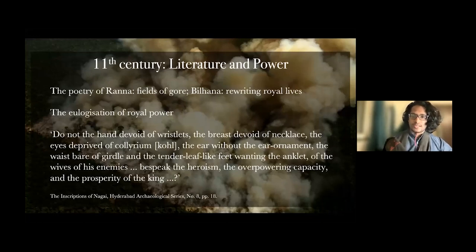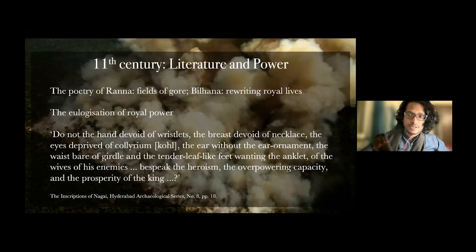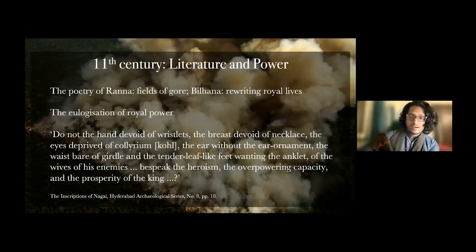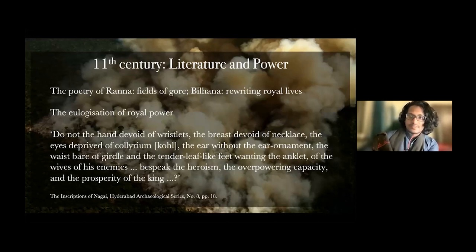A verse describing the Chalukya king Jayasimha II brings up a wider point very often neglected: how pervasive violence against women was. There's a tendency today to assume violence against women was introduced by invaders from Central Asia, but as this shows, Indian kings were no less unpleasant in their attitude toward women. The verse reads: 'Do not the hand devoid of wristlets, the breast devoid of necklace, the eyes devoid of kohl, the ear without earring, the waist bare of girdle, and the tender leaf-like feet wanting the anklets, of the wives of his enemies speak the heroism and prosperity of the king?' Very clearly, the king's martial success was intertwined with his ability to enact violence against his enemies and especially against their women.